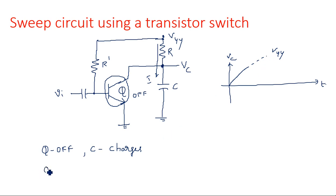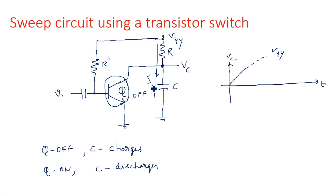Now when the transistor comes into on state, capacitor C discharges. The discharging path is through the on-resistance of the transistor. When the transistor is in on state, there exists a small or low resistance path from collector to emitter.